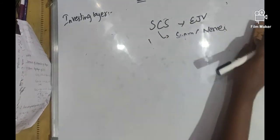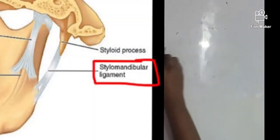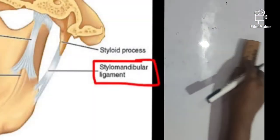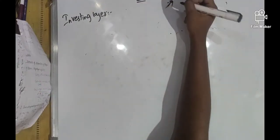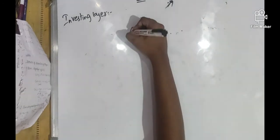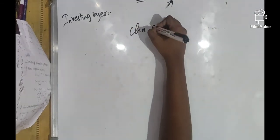I previously mentioned the stylomandibular ligament which is also enclosed by deep cervical fascia, and muscles like omohyoid and digastric muscles are also enclosed by deep cervical fascia.